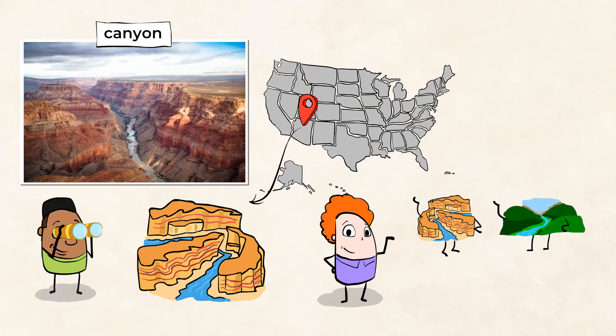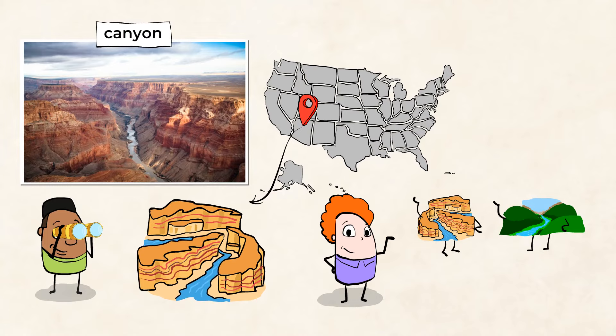A canyon is like the cousin of a valley. It's much deeper, with steep sides, and is not always found between mountains. Canyons sure are a beautiful sight to see. But let's see what other landforms we can find on our amazing Earth.